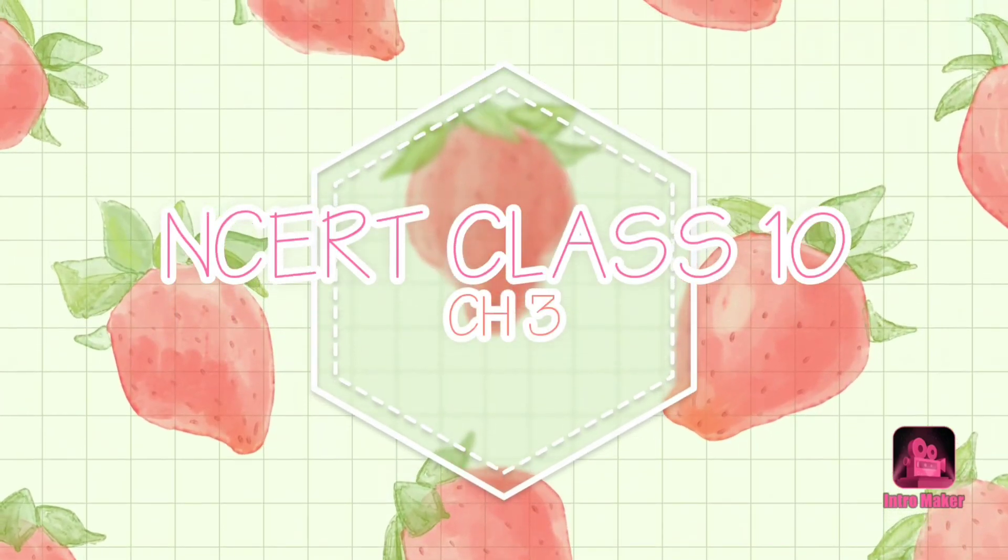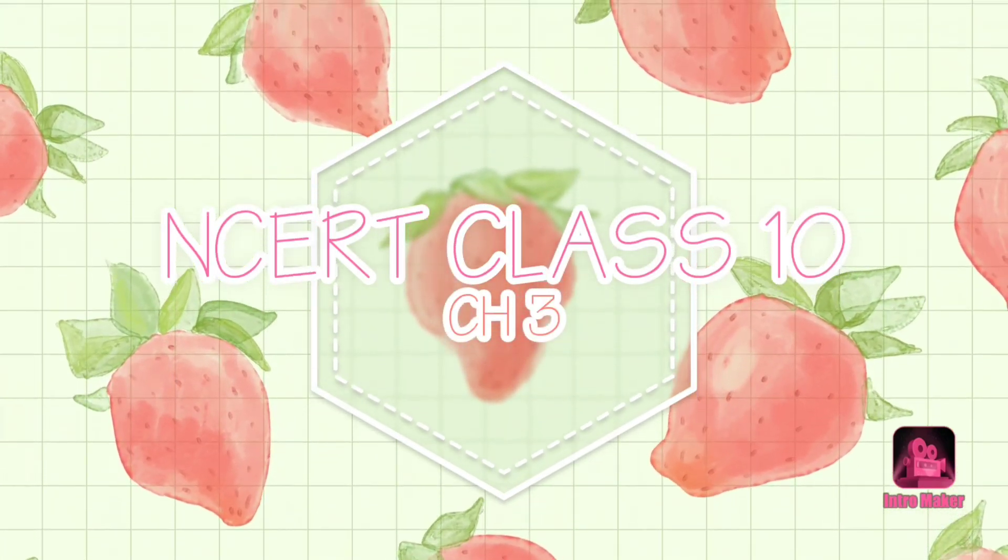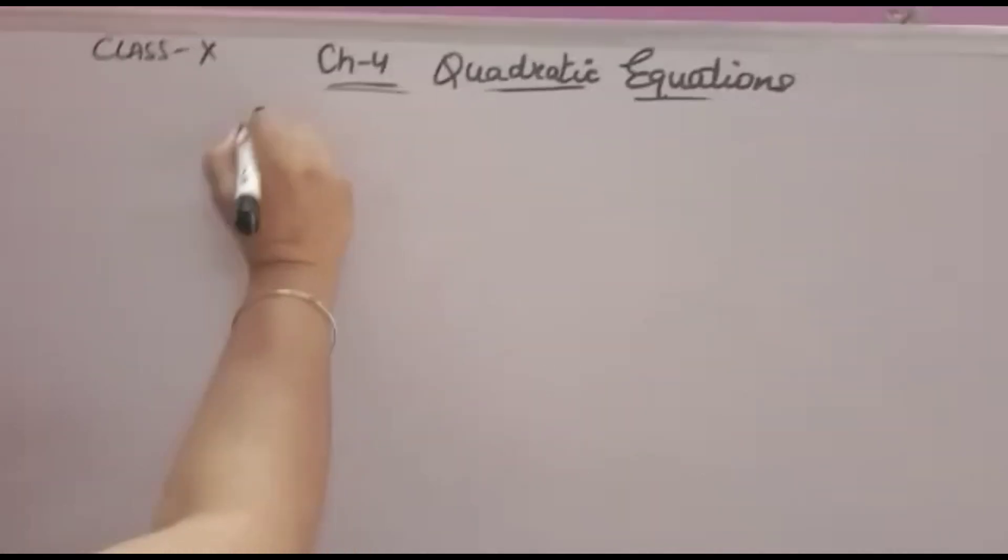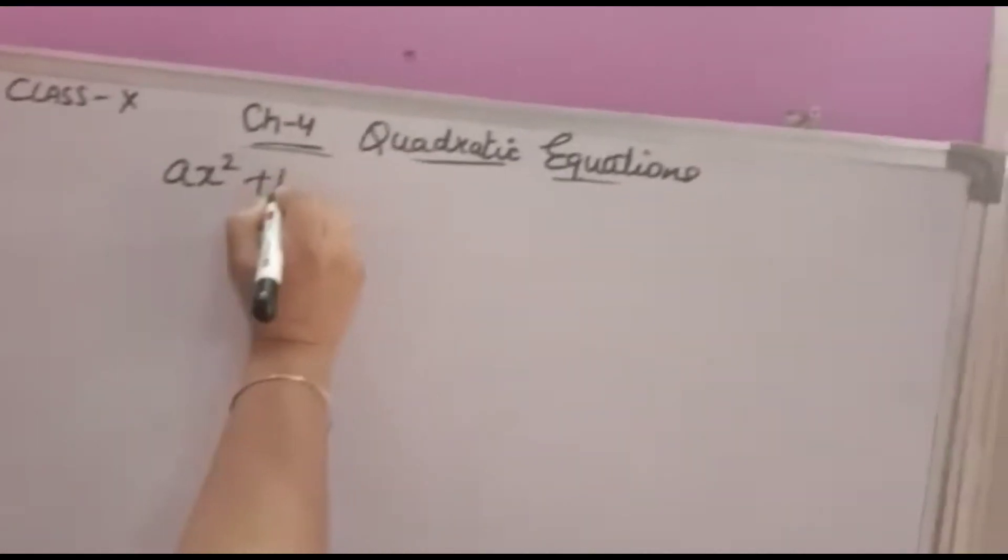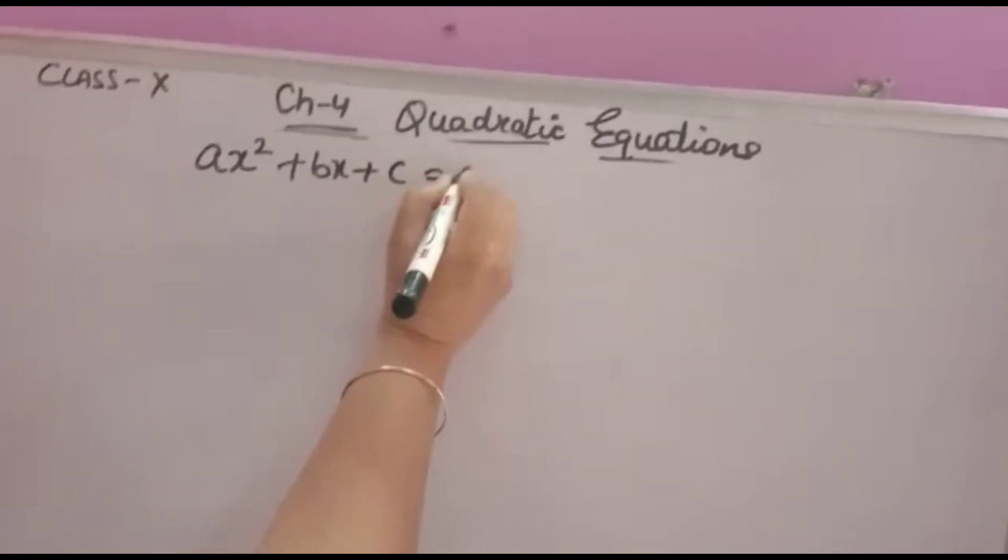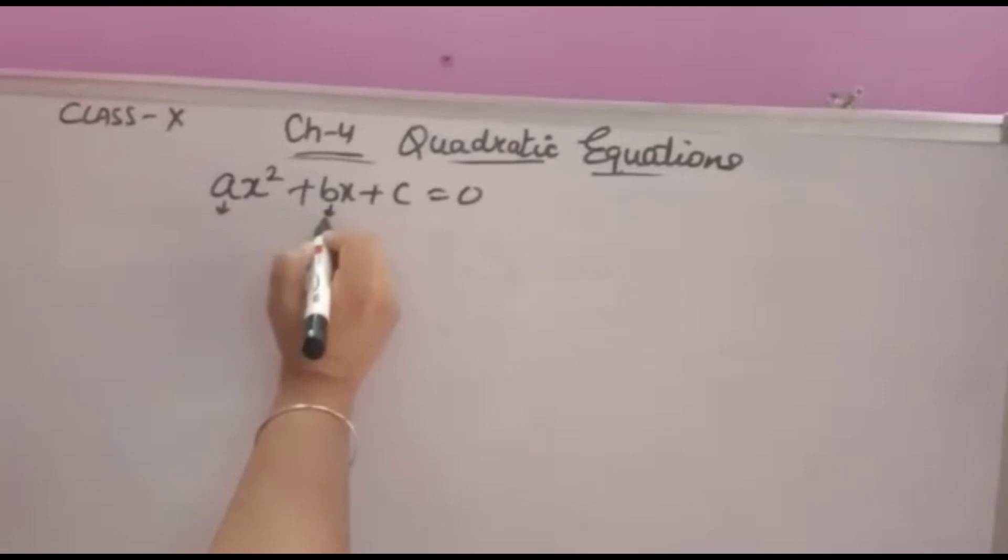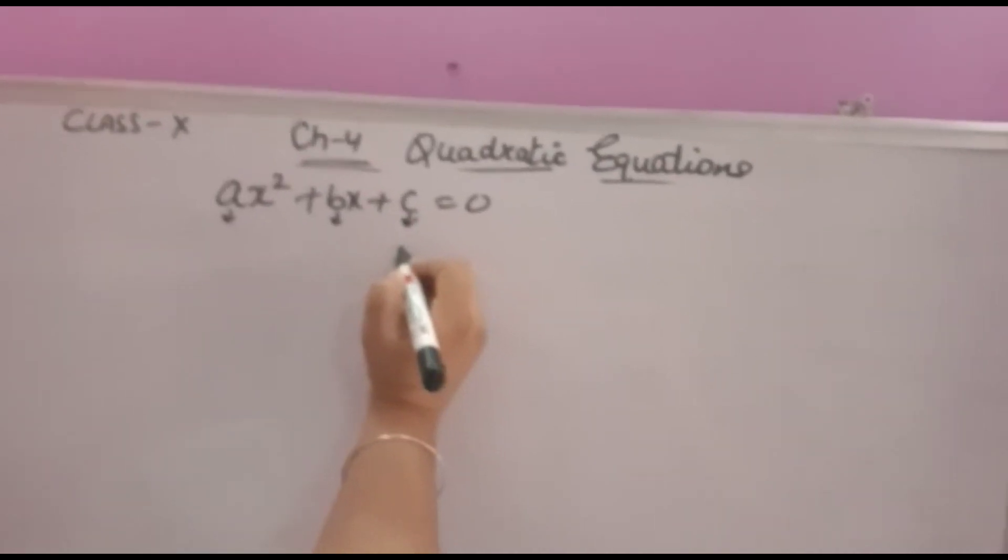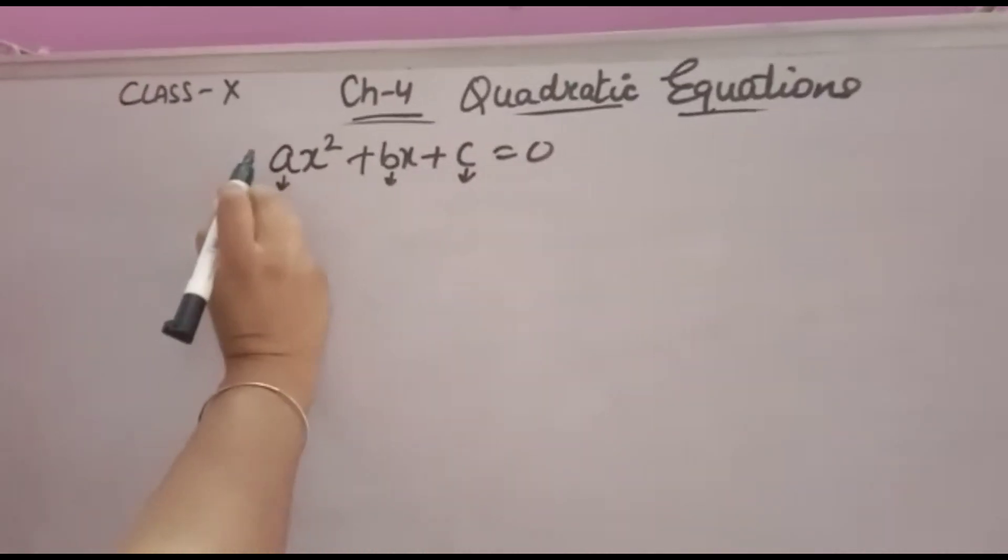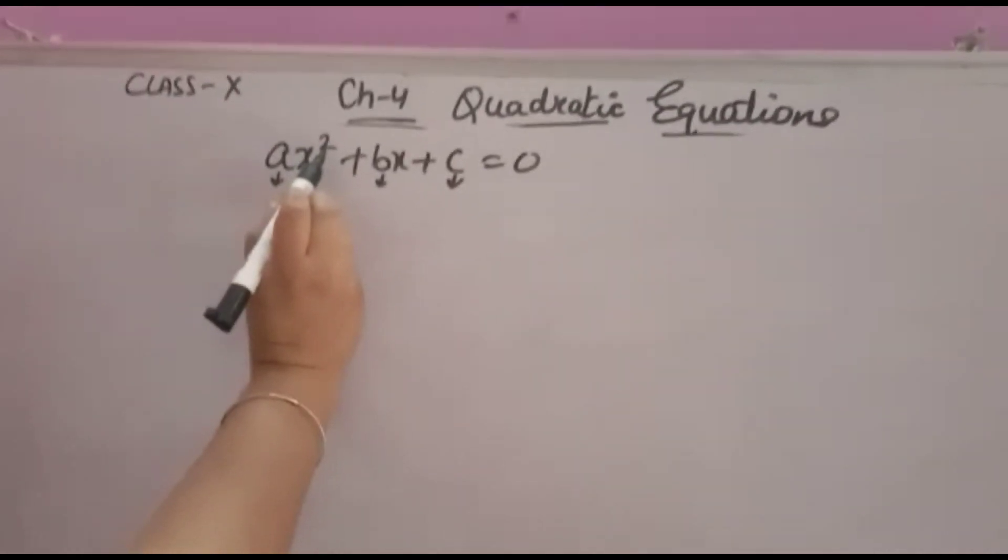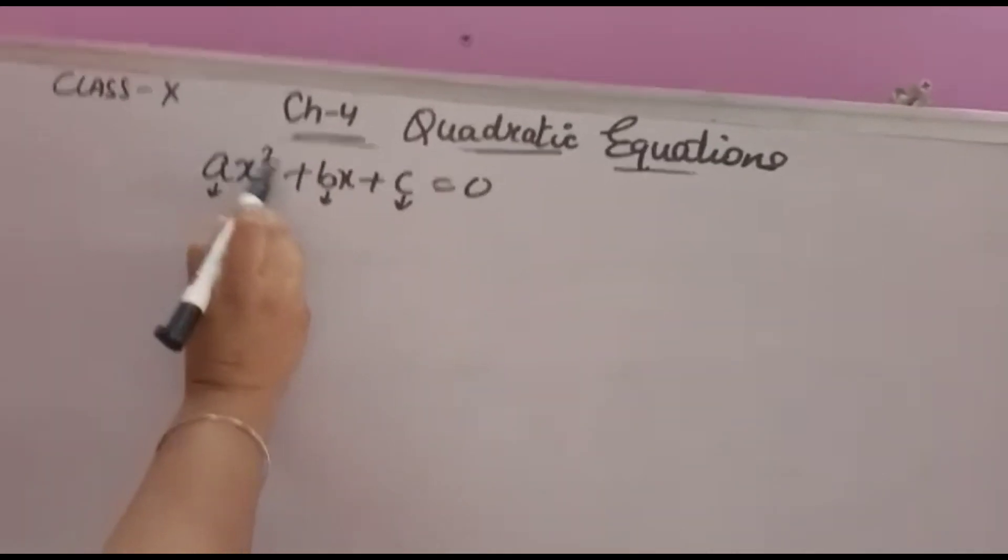Welcome to Class 10, Chapter Number 4, Quadratic Equation. The equation of this form is known as Quadratic Equation, where A is coefficient of x squared, B is coefficient of x, and C is constant term. Now, this equation is a quadratic equation if the highest power of x is 2.